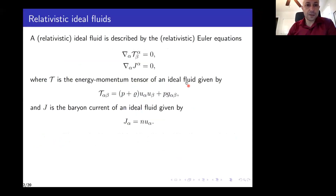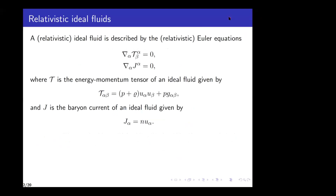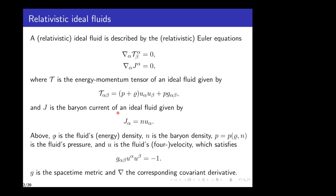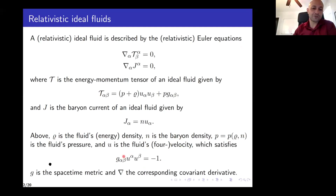This slide is probably known to everyone, so I'm going to use it mainly to fix my notation. A relativistic ideal fluid is described by the relativistic Euler equations. Here, T is the energy-momentum tensor and j is the baryon current. My notation: rho is the energy density, n is the baryon density, p is the pressure given by an equation of state, u is the fluid velocity satisfying the normalization condition as a timelike unit vector field. g is the spacetime metric and nabla the corresponding covariant derivative.